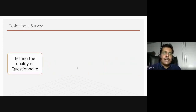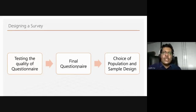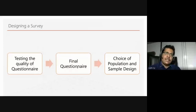After you have devised the questionnaire, you have to test the quality through a pretest and pilot test. Then we have the final questionnaire, and from there we decide the sampling frame and the sample design. Finally, it is administered through field workers to the respondents. These six or seven steps are involved in designing a questionnaire, and we'll be talking about most of these steps as we go along.